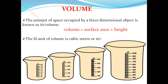The amount of space occupied by a three-dimensional object is known as volume. Two dimensions give us area (length × breadth), while three dimensions give us length, breadth, and height. The formula for volume is surface area into height. The SI unit of volume is cubic meter or meter cube. Different beakers range from 10 mL to 250 mL in size.